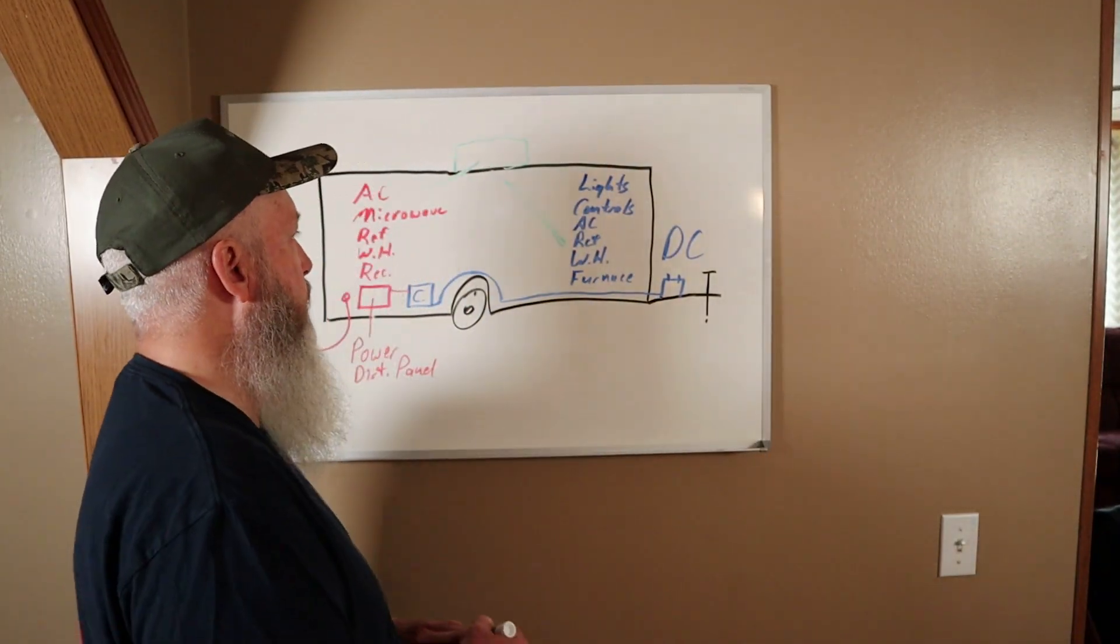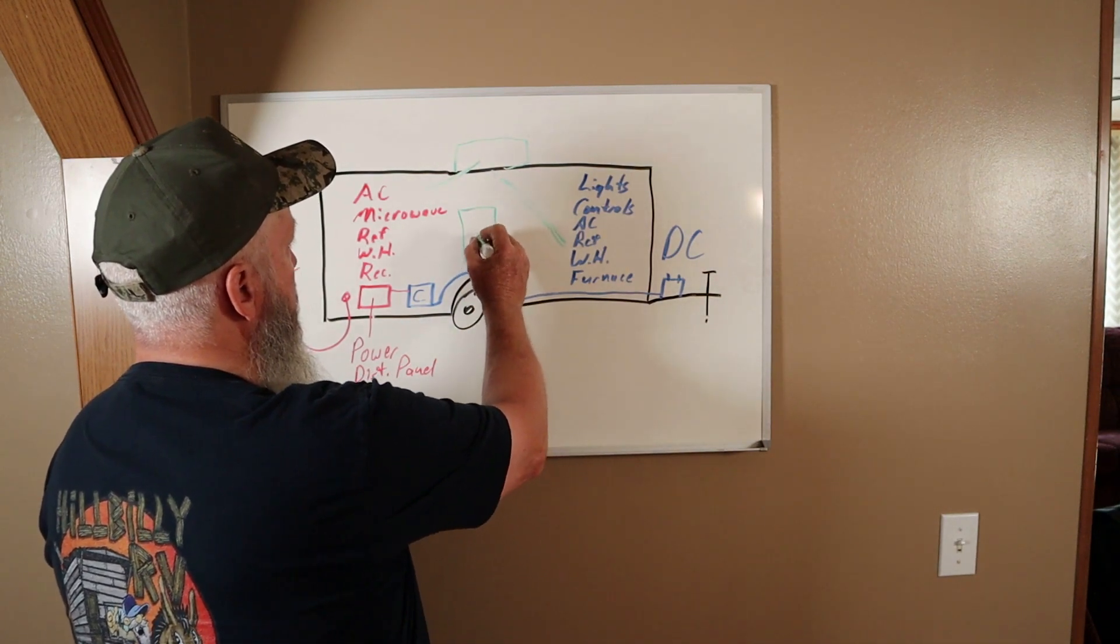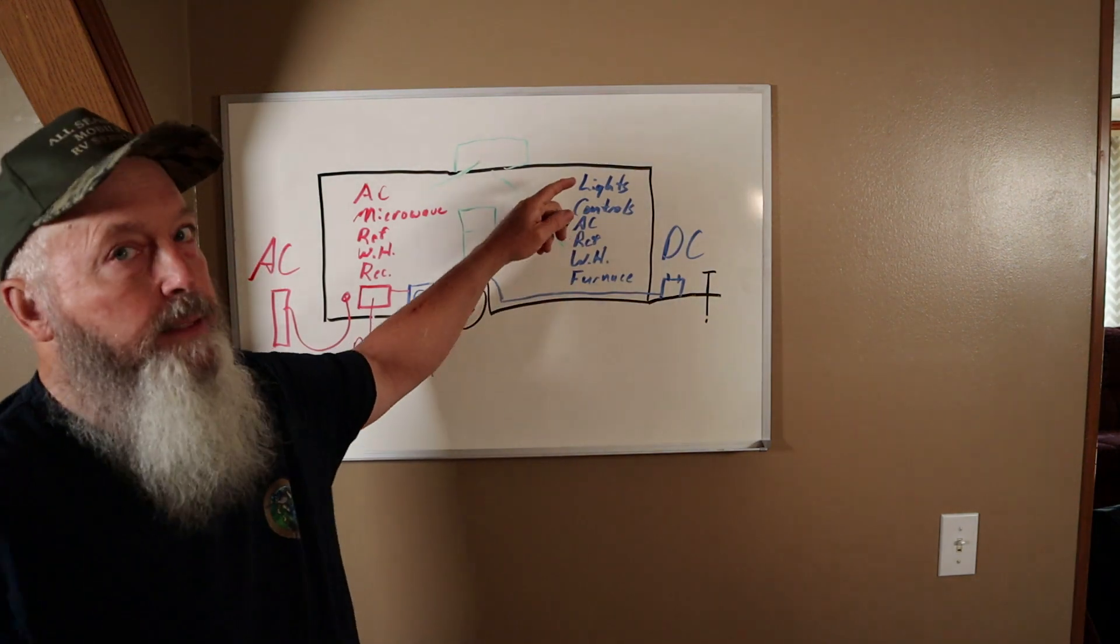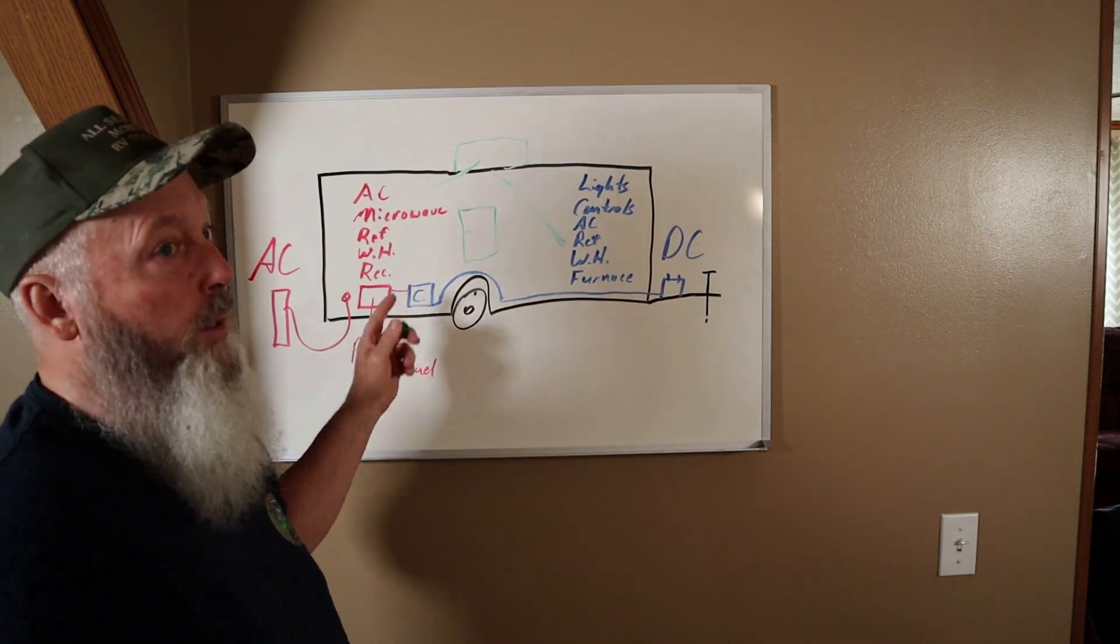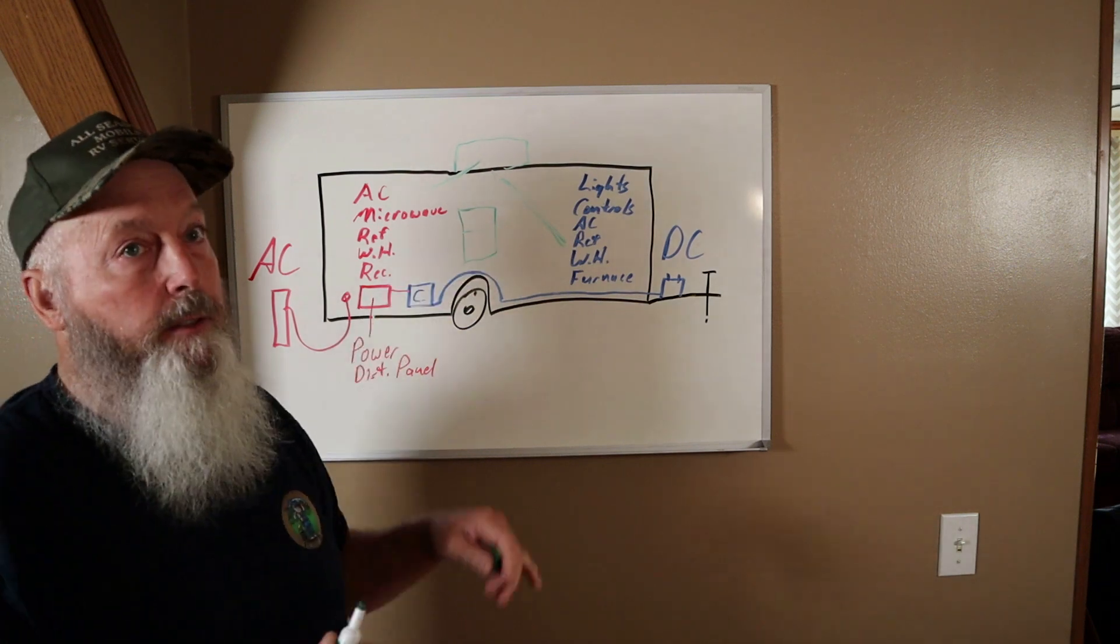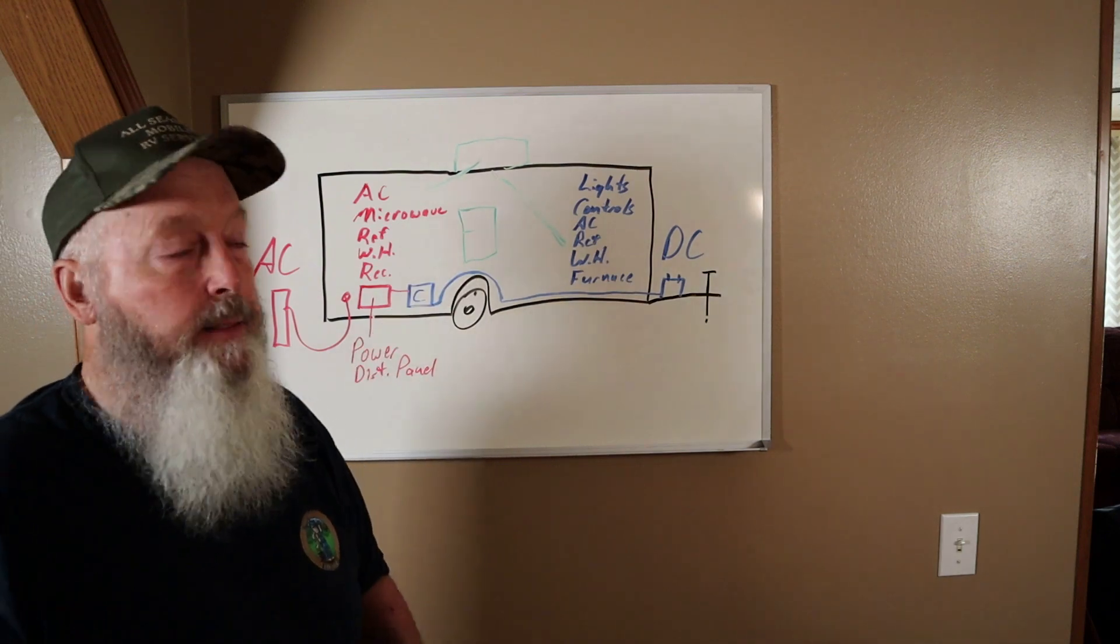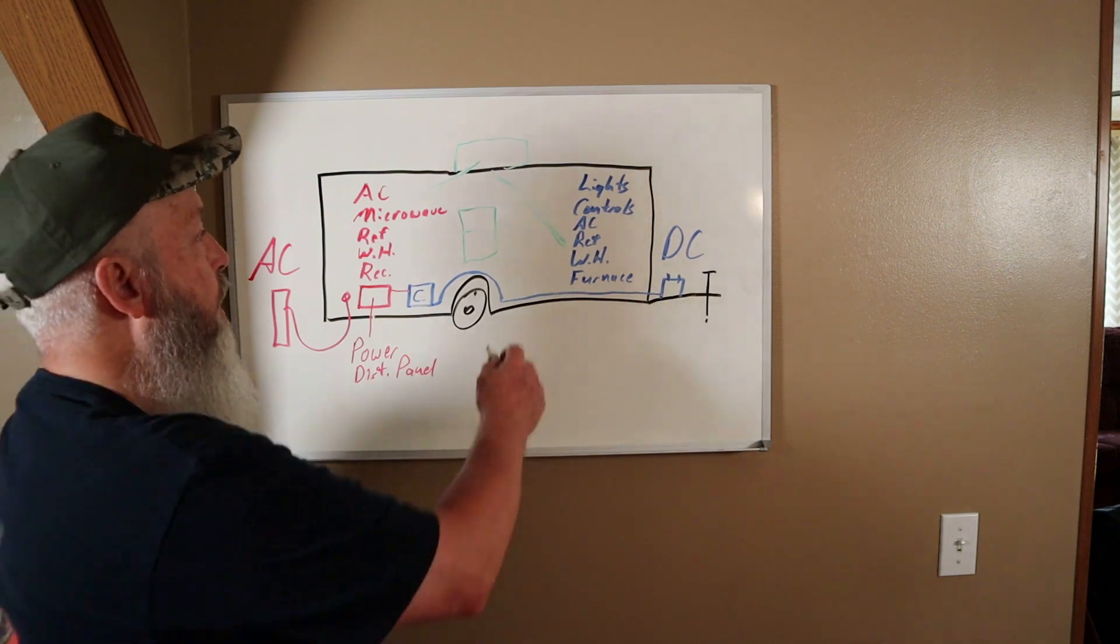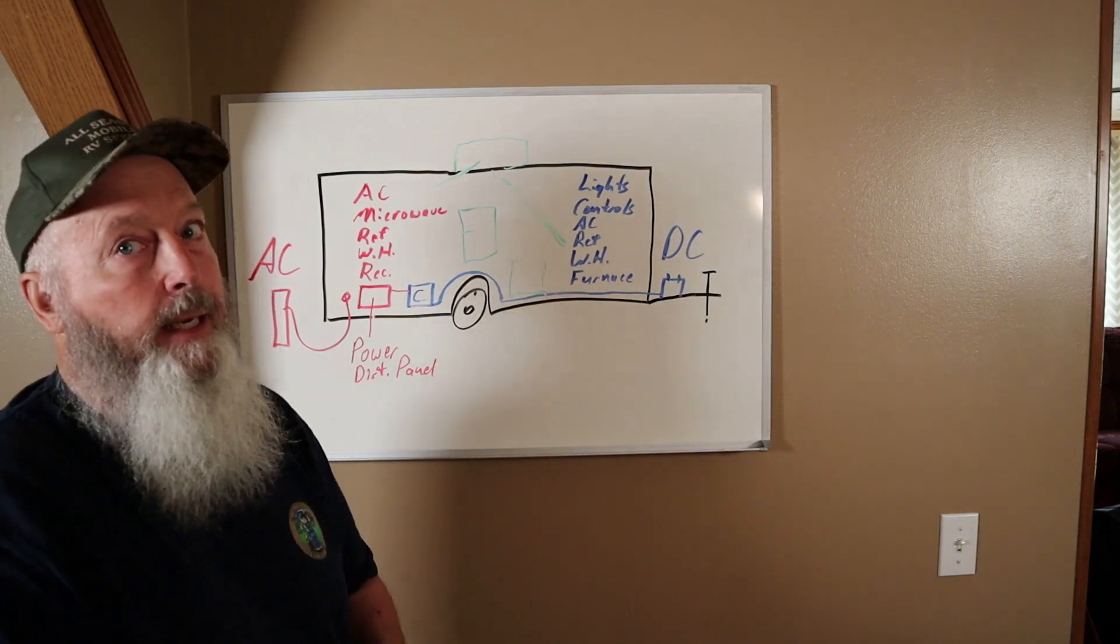Now let's talk about the refrigerator and the water heater really quickly. So you got your refrigerator - there again the refrigerator has to have DC power to run the controls, and if you want it to run on the AC element, you know the AC heating element, then you need AC. But if you do not have AC, then it will run on gas.